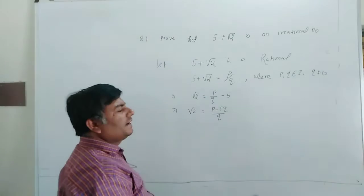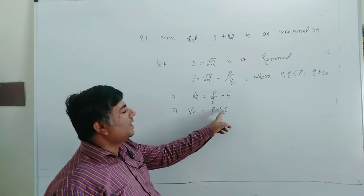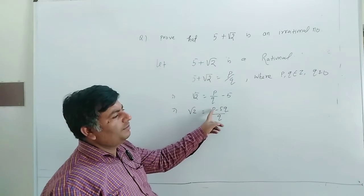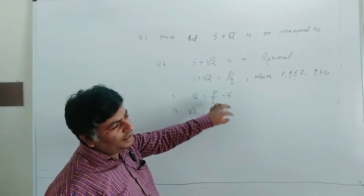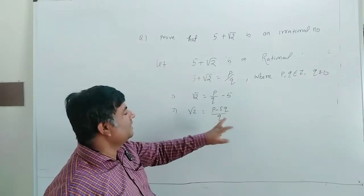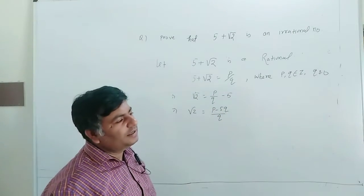Now, Q and P are integers. P minus 5Q is integer minus integer, which is integer. Denominator Q is integer, numerator P minus 5Q is integer.